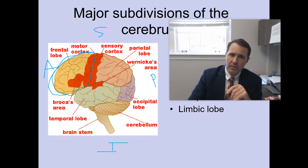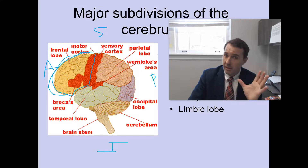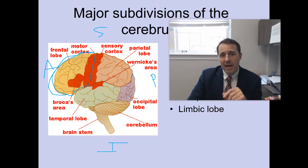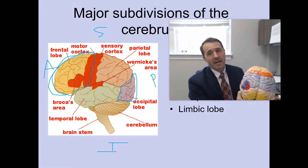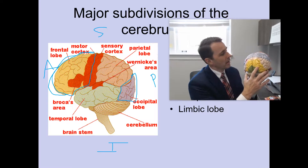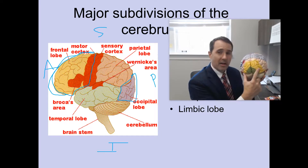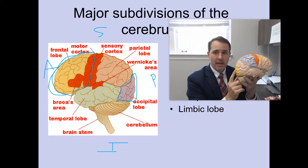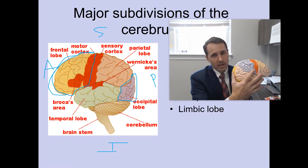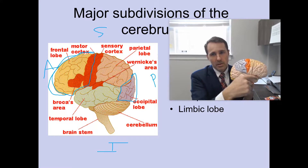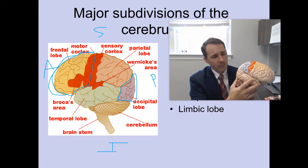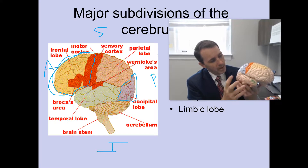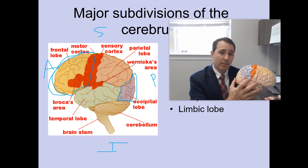Posterior to the frontal lobe you have the parietal lobe — left and right. Most posterior on the brain is the occipital lobe — left and right. And if I turn the brain laterally, here's your sylvian fissure, and beneath the sylvian or lateral fissure you have the temporal lobe.